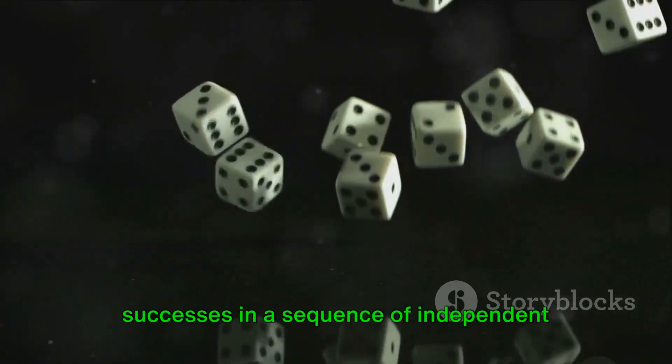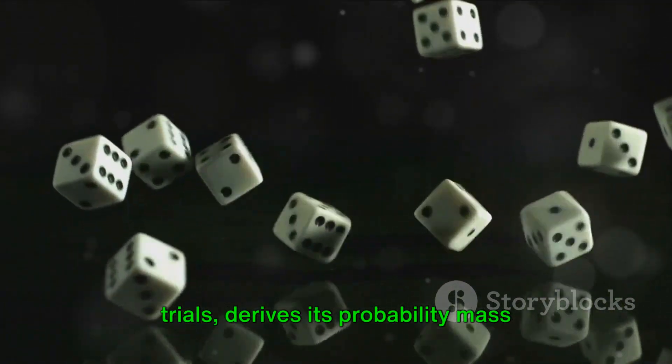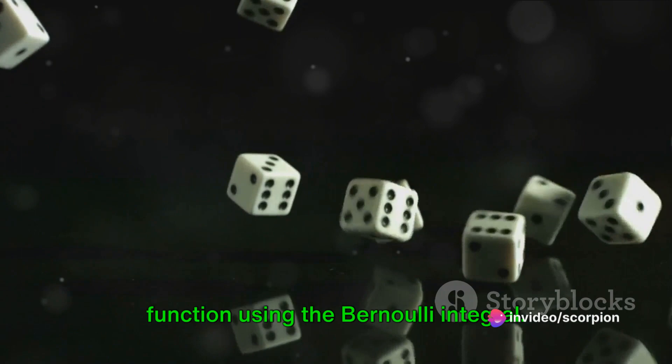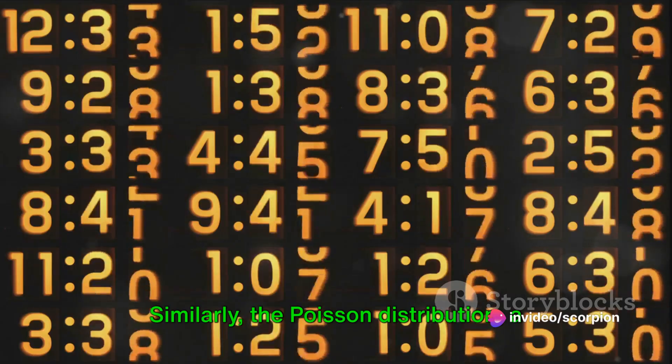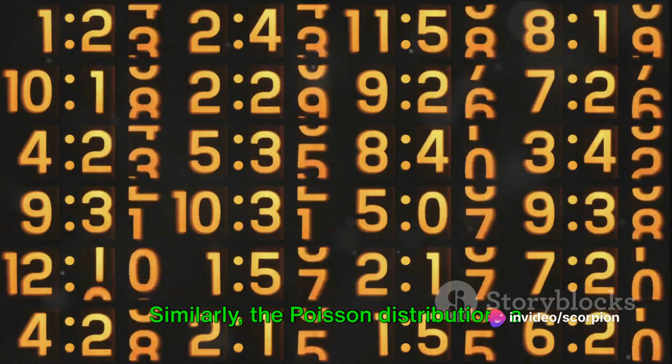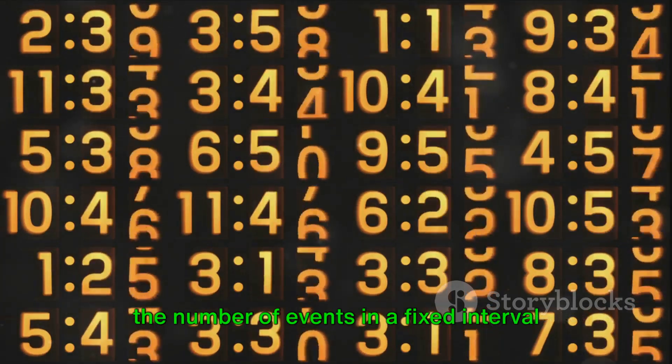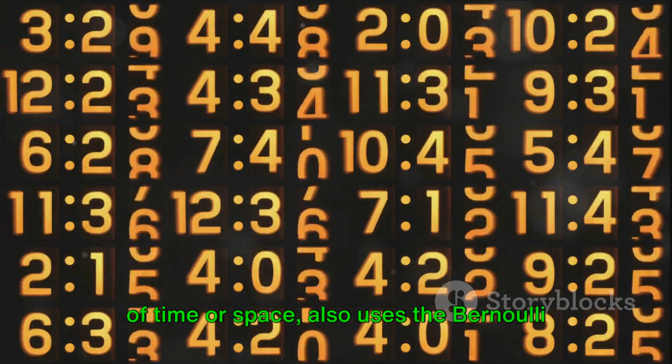Similarly, the Poisson distribution, a probability distribution that describes the number of events in a fixed interval of time or space, also uses the Bernoulli integral in deriving its probability mass function.